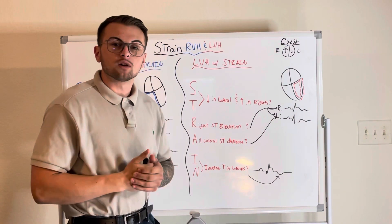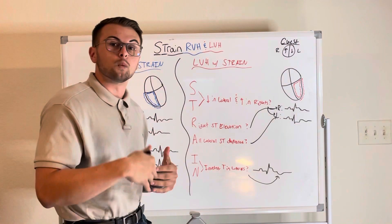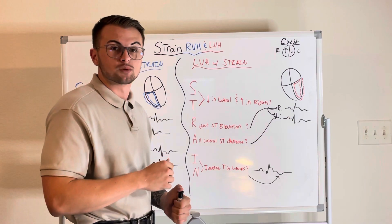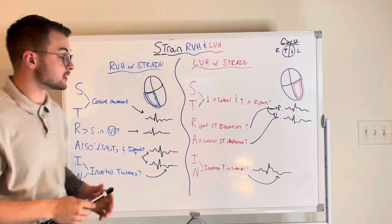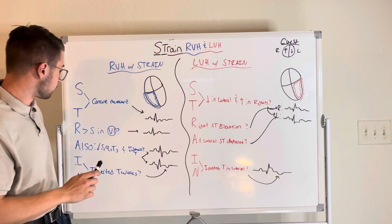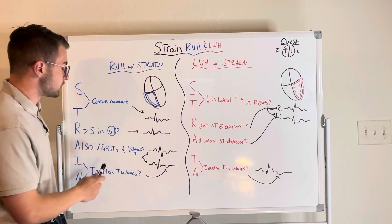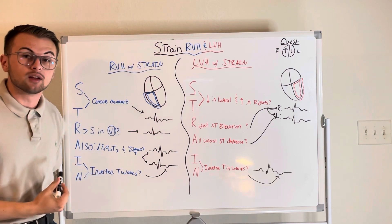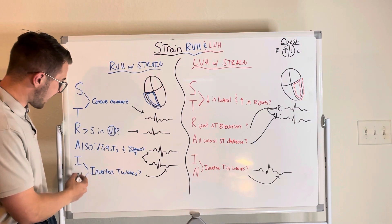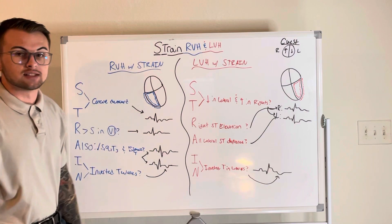Quick recap of what we went over today: hypertrophy of the ventricles with strain patterns. To remember right ventricular hypertrophy with strain, remember the word STRAIN: ST concave downward, R greater than S in V1, checking for the S1, Q3, T3 pattern and biphasic T waves, and IN stands for inverted T waves.